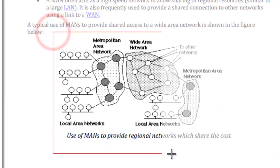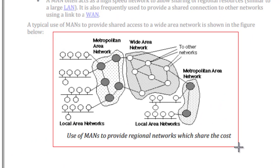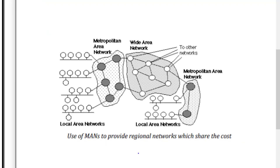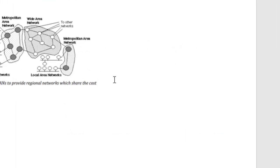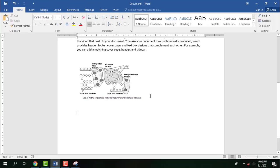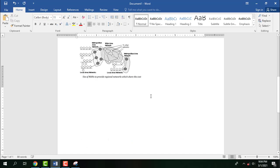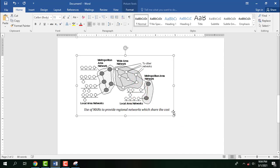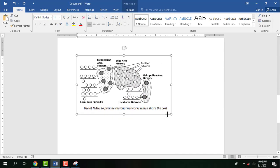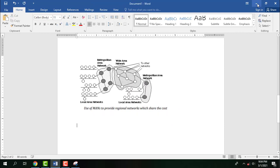Select the required part of the picture you want to capture. Then switch to Microsoft Office Word and paste it on the page by pressing Ctrl+V or Ctrl+Insert. The captured picture will appear on the page.